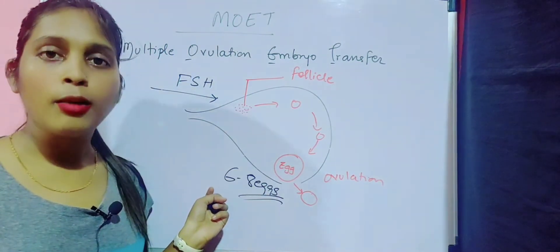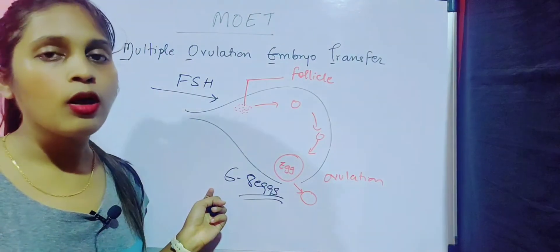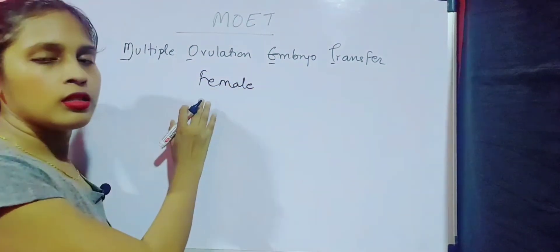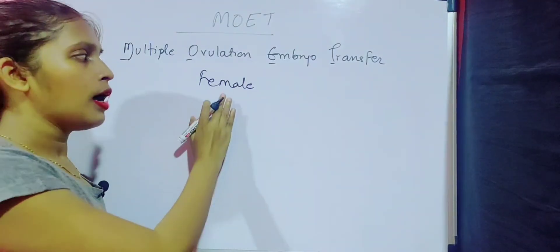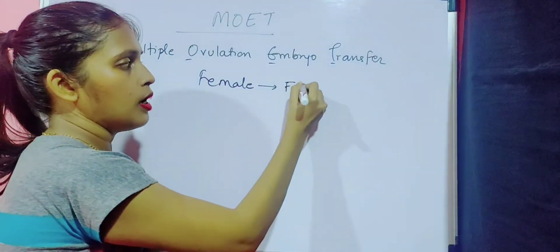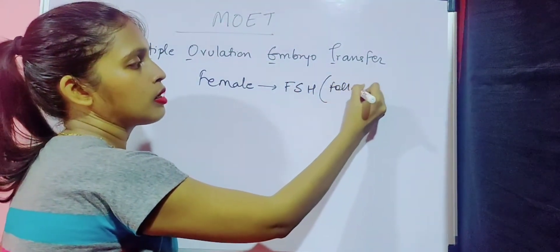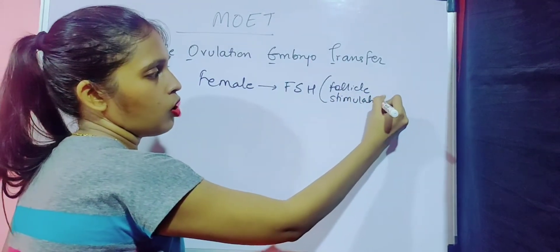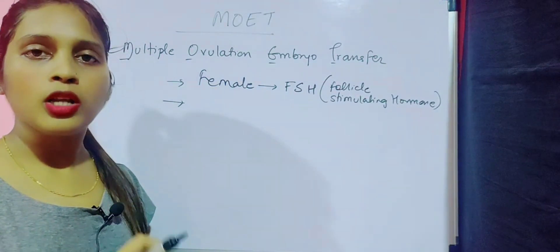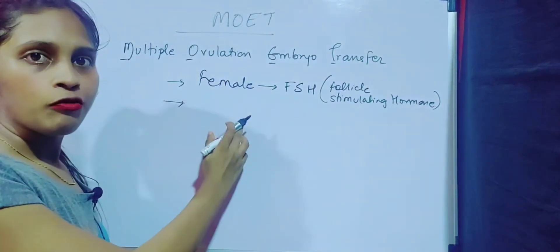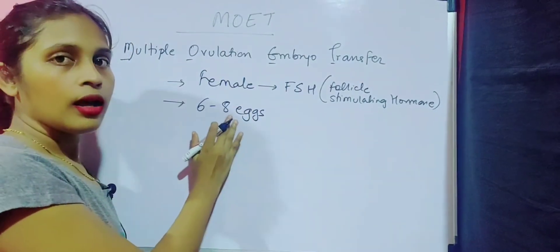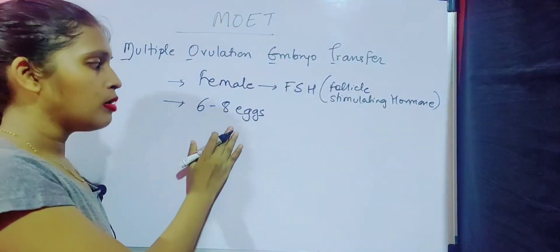So now we have an increased count of eggs. If the count is increased, there will be more fusion happening, more zygotes, and more progeny. We had a normal female giving only one egg per cycle. By giving an FSH injection — Follicle Stimulating Hormone — the female now produces around six to eight eggs.